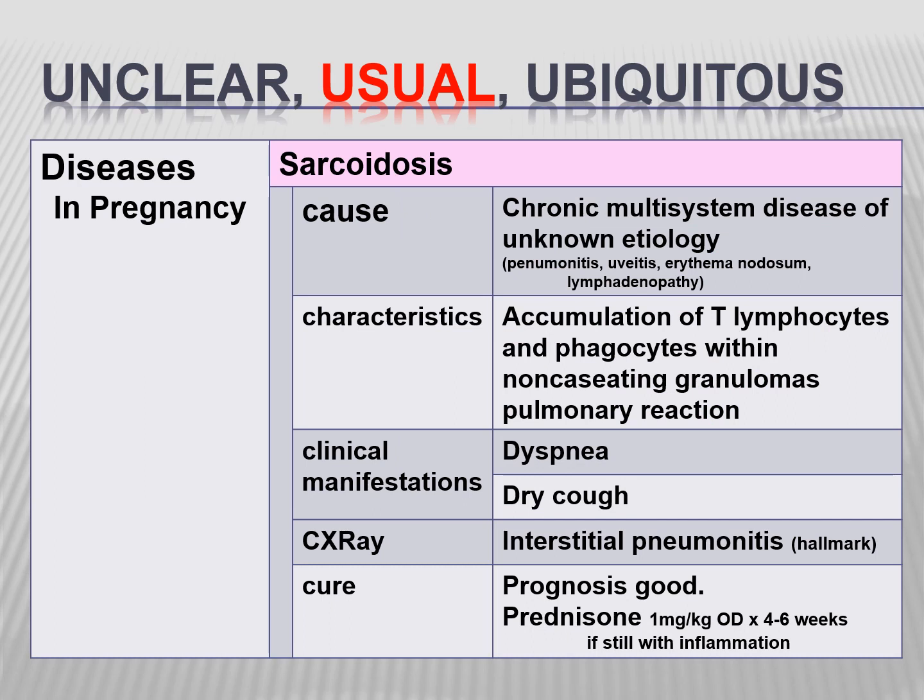Sarcoidosis is another disease entity in pregnancy. It is a chronic multisystem disease of unknown etiology, characterized by accumulation of T lymphocytes and phagocytes within non-caseating granulomas leading to a pulmonary reaction. It manifests with dyspnea and dry cough. Chest X-ray may show interstitial pneumonitis. Prognosis is good; treatment is prednisone 1 mg/kg once a day for 4 to 6 weeks.